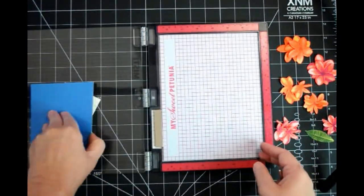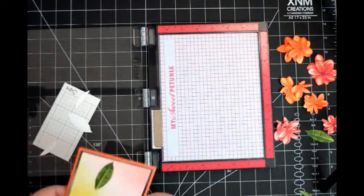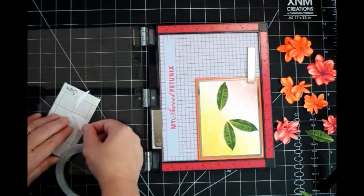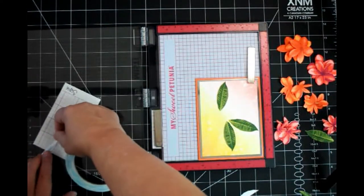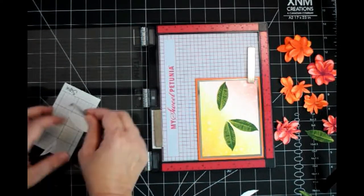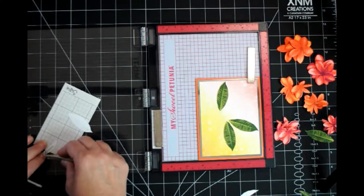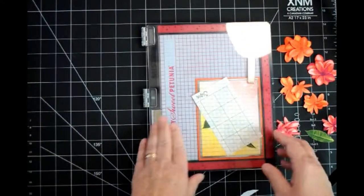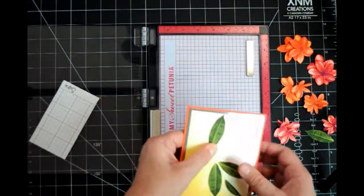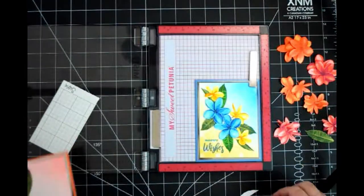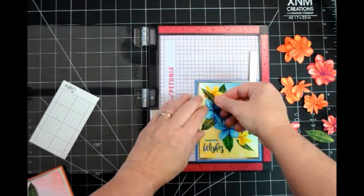A side note: Sizzix does make a larger size of sticky grid paper, and by cutting it down to a size that better covers the overall card size, that would help avoid the adhesive-less strip at the bottom that can cause a bit of frustration. But I'm using what I have.